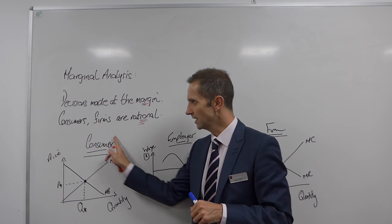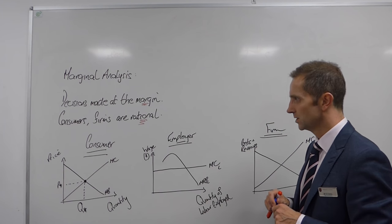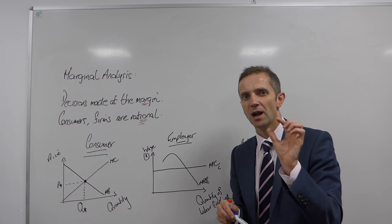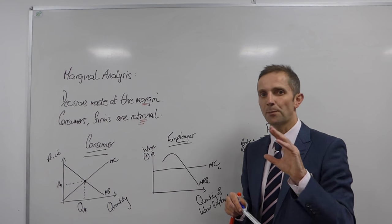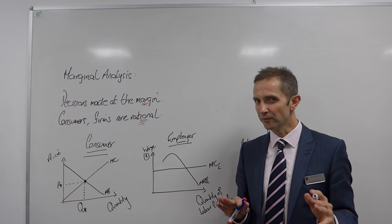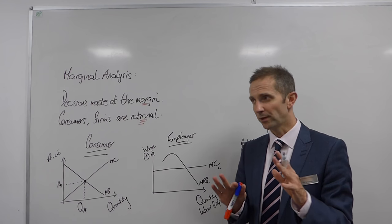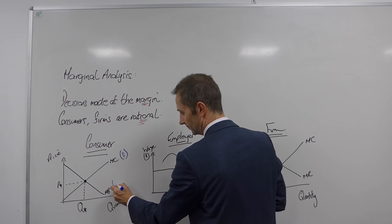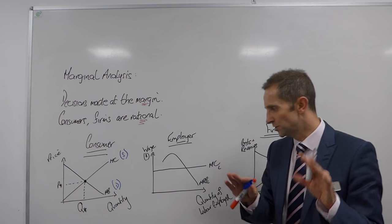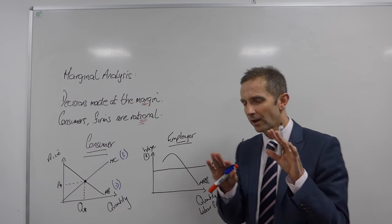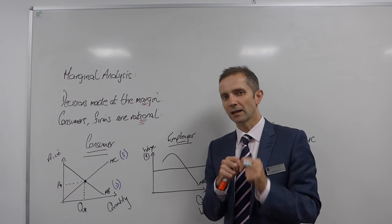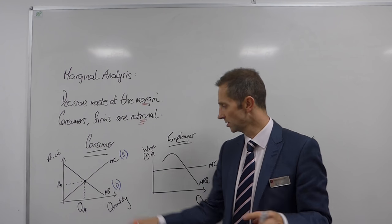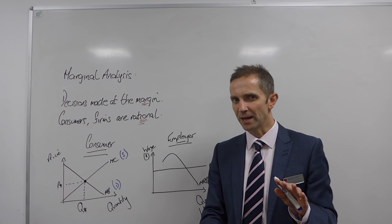So let's take the consumer first of all if we may. What does the consumer do? Well, the consumer buys goods and services from firms who supply the goods and services. Now you will be familiar with your standard supply and demand analysis, whereby this would be the supply curve and this would be the demand curve. Now I'm substituting demand and supply and replacing those nomenclatures with two different ones. And they are MC, which is the marginal cost, and MB, which is the marginal benefit.